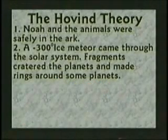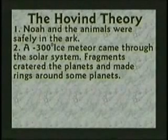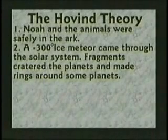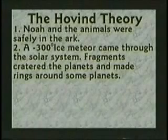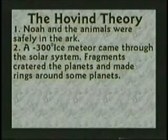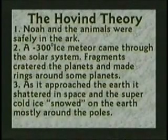I think a 300 below zero Fahrenheit ice meteor came flying through the solar system and began to break apart. Fragments of this meteor hit the planets and caused the craters on the moon and other planets, and a bunch of it came and made the rings around the other planets. Saturn, Uranus, and Neptune all have ice rings around them, and some of the fragments of this meteor hit the Earth, landing on mostly the north and south pole, freezing the mammoths standing up.